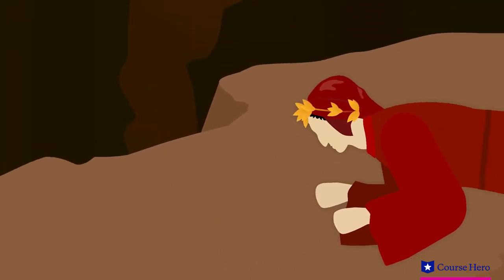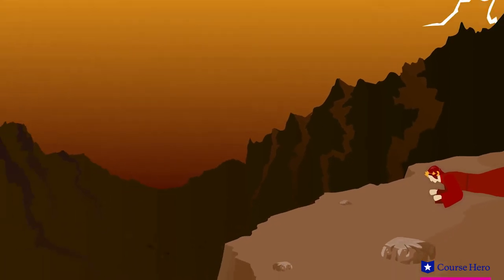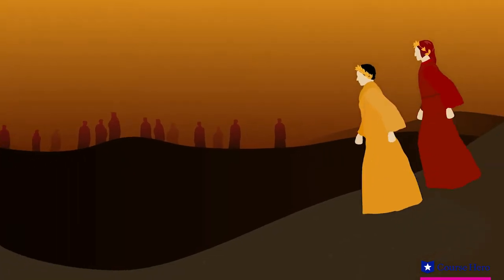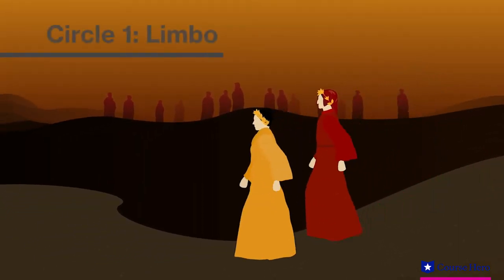Dante awakens suddenly to the sound of thunder and wailing. He is at the edge of a deep dark valley or abyss. Dante and Virgil descend into the blind world and enter the first circle of hell, Limbo.